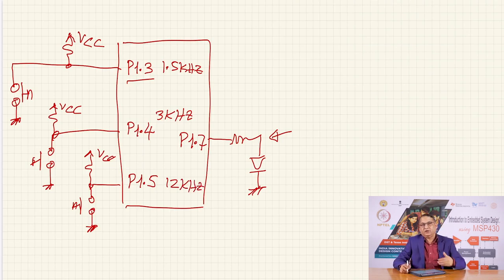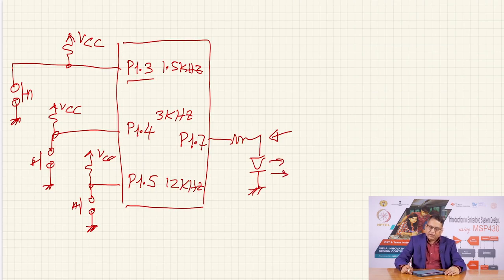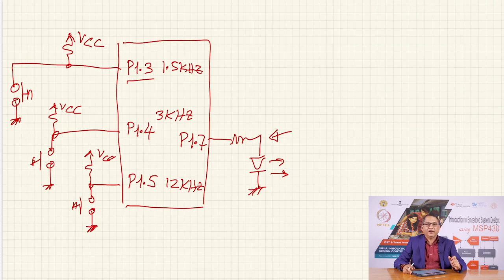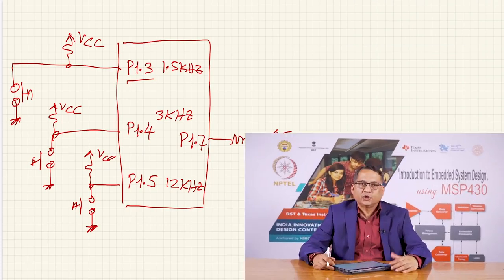We have used delays so that the LED will blink in the visible range — you can observe the LED turning on and off, and the rate of blinking will be perceptibly different when you choose the different clock frequencies. Let us go through the code to understand how it works.